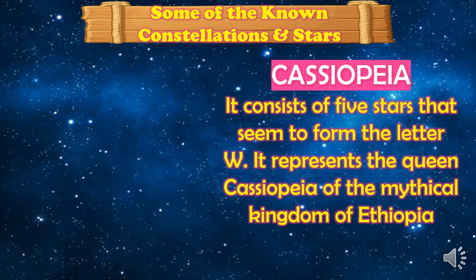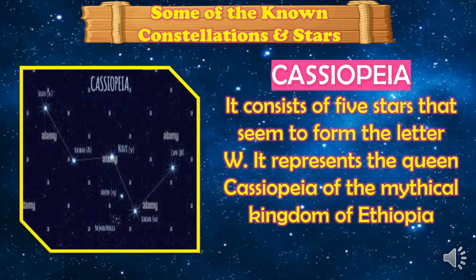Next, we have Cassiopeia. It consists of five stars that seem to form the letter W. It represents Queen Cassiopeia of the mythical kingdom of Ethiopia.